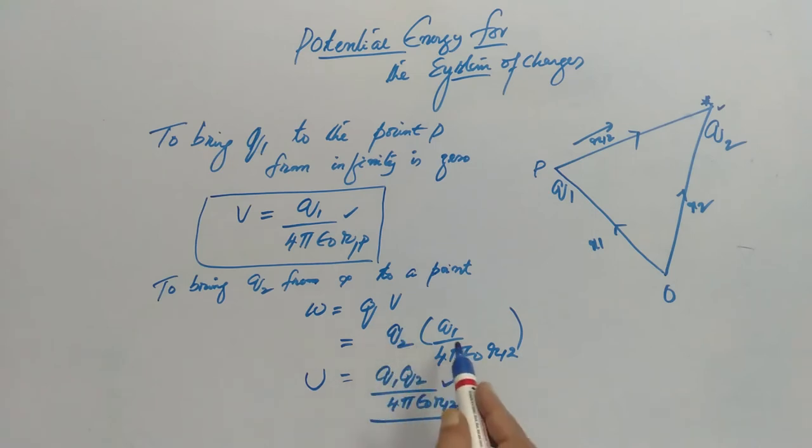Here we have taken Q2 times V because Q1 is already present. Now if Q2 is already present, this Q1 comes out. So Q1 Q2 by 4π epsilon naught R12. So either you bring first Q1 or you bring first Q2, the result remains the same.